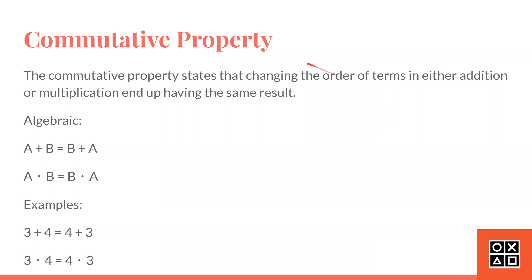First, we'll be talking about the commutative property. The commutative property states that changing the order of terms in either addition or multiplication end up having the same result.